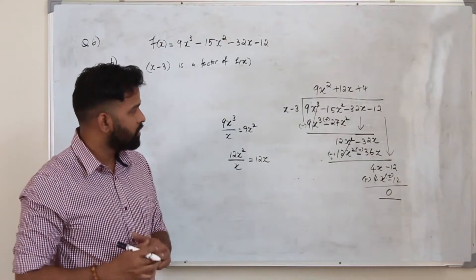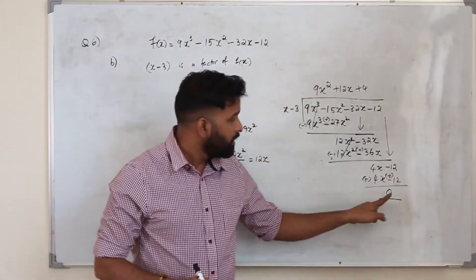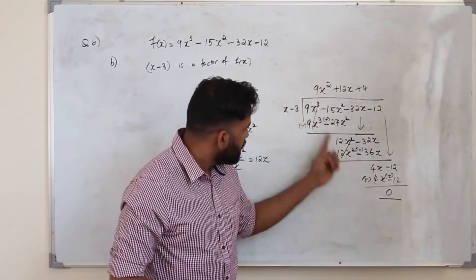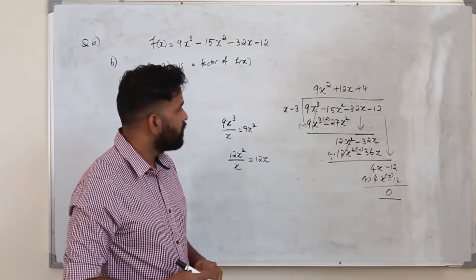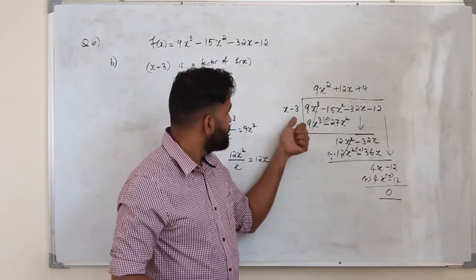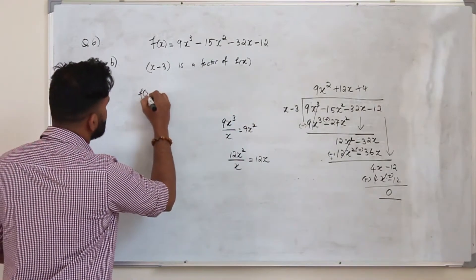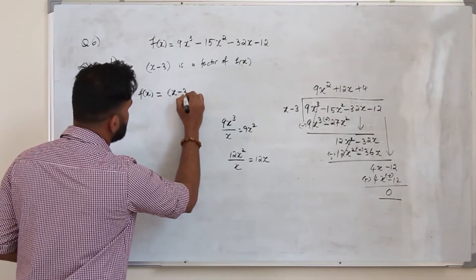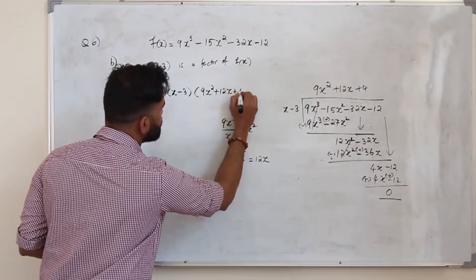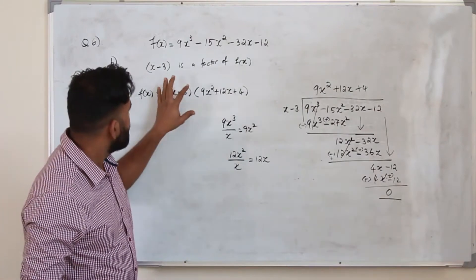Since x minus 3 is a factor of this function, the remainder must be 0. If you get any other number, you have made a mistake. If x minus 3 were not a factor you could get any remainder, but here the remainder must be 0. So you can write f of x as x minus 3 times the quotient 9x squared plus 12x plus 4.